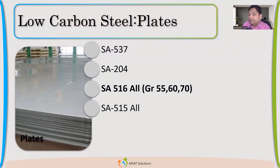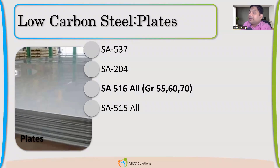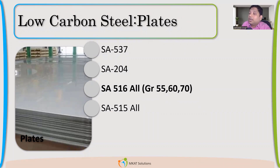SA515 is coarse grain. Please remember: coarse grain is good for high temperature. That is the reason SA515 will be our preferred choice for high temperatures like 360, 370, 380°C, because that is the creep zone. In the creep zone, coarse grain structure performs better.